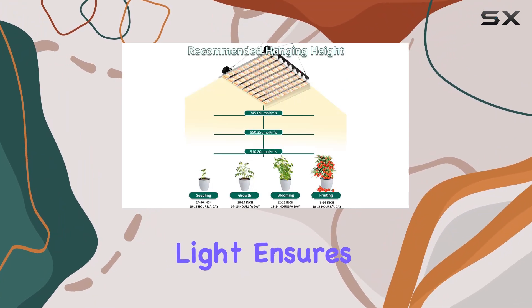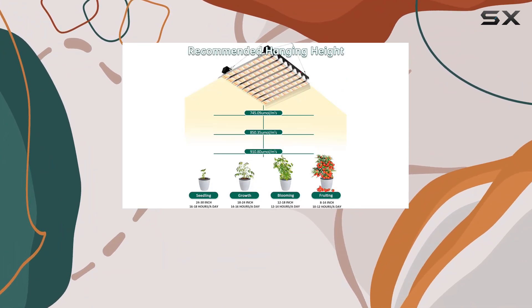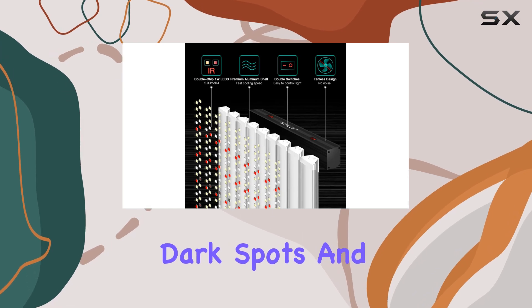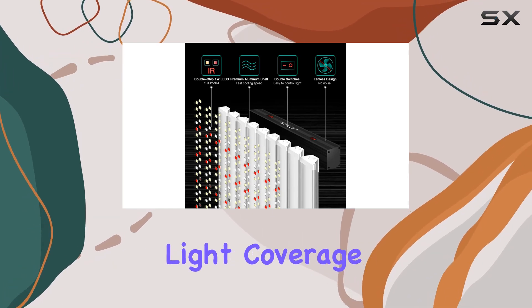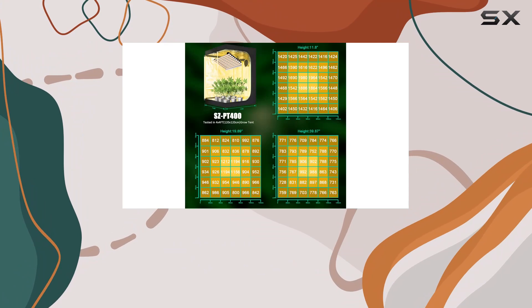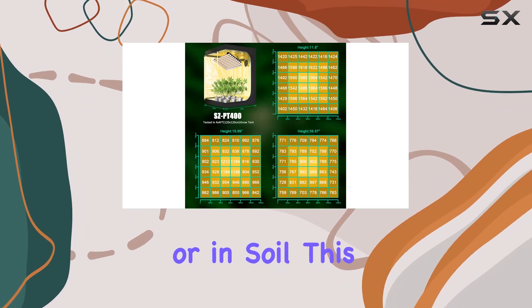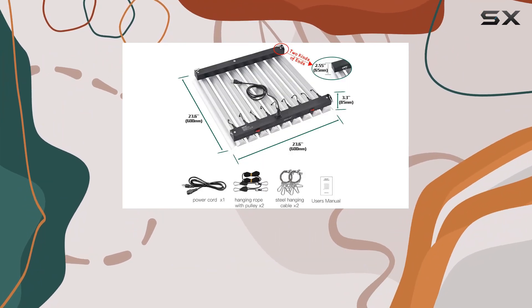The square shape of the light ensures even distribution of light across your growing area, eliminating dark spots and providing uniform light coverage. Whether you're growing plants hydroponically or in soil, this grow light is versatile enough to meet your needs.